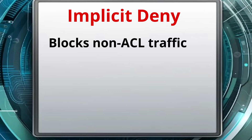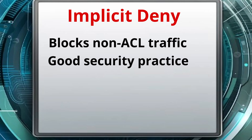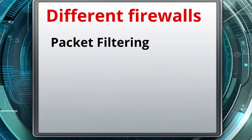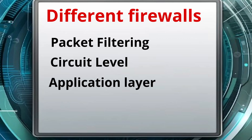Not only is implicit deny a good security practice, it also makes your job as the network administrator a lot easier. Chances are, you want to block a lot more types of traffic than you want to allow. There are several different types of firewalls you need to be familiar with: packet filtering firewalls, circuit-level gateways, and application layer firewalls.